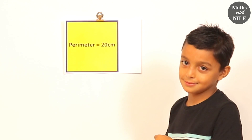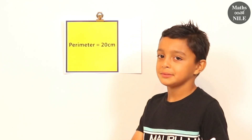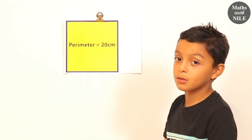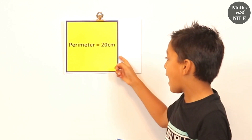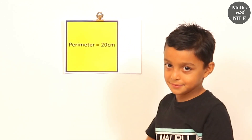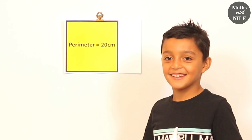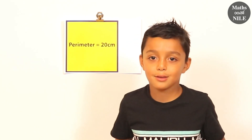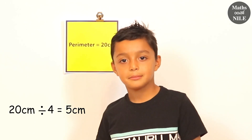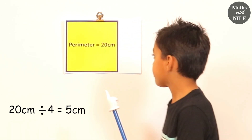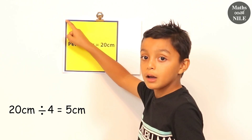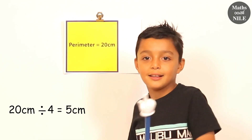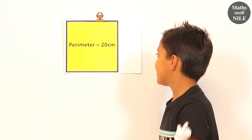Behind you is another square. The difference with this question is I don't want you to work out the perimeter, because I've given you the perimeter — it's 20 centimetres. But we need to find out how long one of the sides is. One of them is 5 centimetres, because there are 4 sides and 5 goes into 20 four times — so 20 divided by 4 is 5. Let's check by counting around: 5, 10, 15, 20. So the length of each side is 5 centimetres.